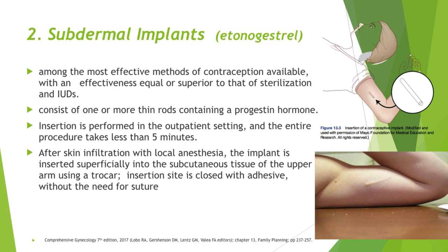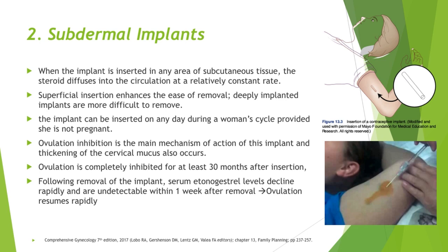The second LARC contraceptive is the subdermal implant, which contains the progestin etonogestrel. Subdermal implants are among the most effective methods of contraception available, with effectiveness equal or superior to that of sterilization and IUDs. It consists of one or more thin rods containing etonogestrel. Insertion is performed in the outpatient setting and takes less than 5 minutes. After skin infiltration with local anesthesia, the implant is inserted superficially into the subcutaneous tissue of the upper arm using a trocar, and the insertion site is closed with adhesive without suturing. Superficial insertion enhances ease of removal; deeply implanted devices are more difficult and more painful to remove.